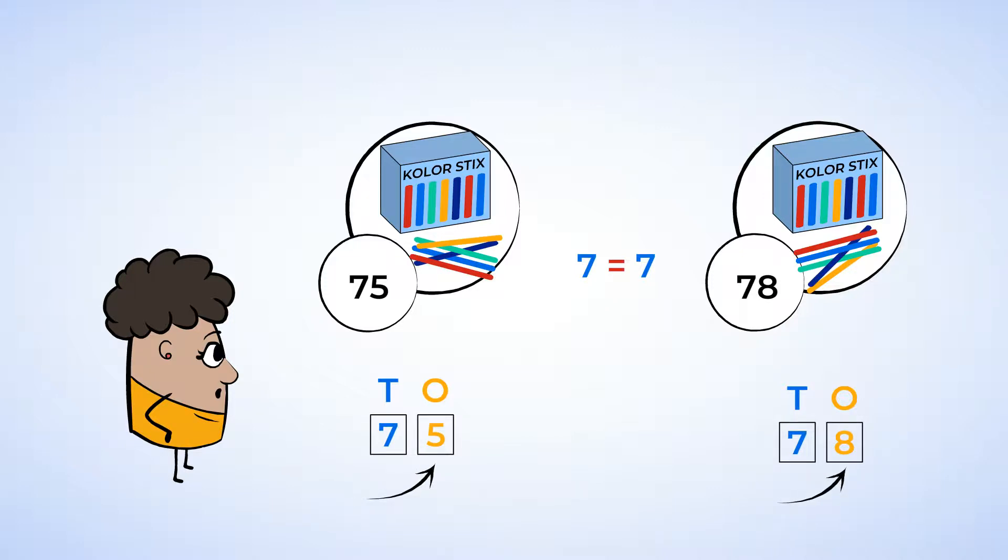The number 75 has 5 ones, and the number 78 has 8 ones. Well, 5 ones is less than 8 ones. So the numbers 75 and 78 both have 7 tens, but 75 has fewer ones than 78. And that means that 75 is less than 78. So this box with 75 has fewer popsicle sticks, and this box with 78 has more popsicle sticks.